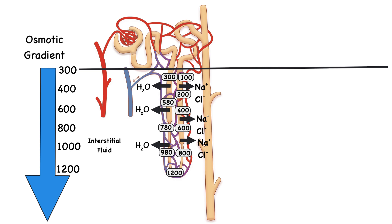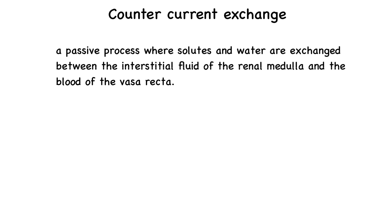As we increase the osmolarity within the interstitial fluid of the medulla, this helps to pull water out of the nephron. When we reabsorb water, we have to move it from the interstitial fluid and then into the blood supply. So increasing the concentration or osmolarity within the interstitial fluid promotes water reabsorption out of the nephron and into the interstitial fluid. Countercurrent exchange is a passive process where solutes and water are exchanged between the interstitial fluid of the renal medulla and the blood of the vasa recta — the next part of the story.